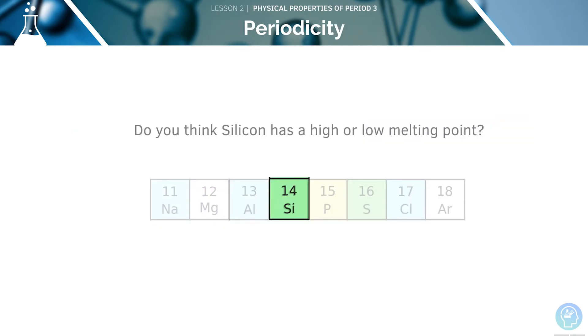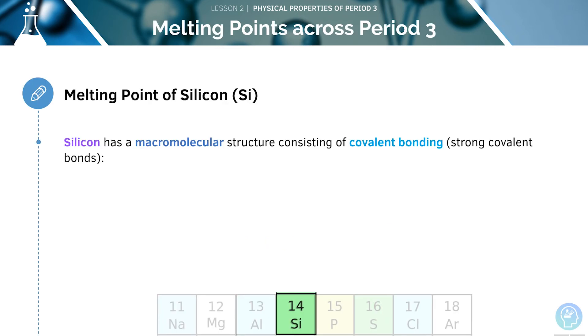Do you think silicon has a high or a low melting point? Silicon has the highest melting point of all the elements in group 3. It has a macromolecular structure, which is made up of strong covalent bonds. These strong covalent bonds will require a large amount of energy in order to break them. Silicon, therefore, will have a high melting point.